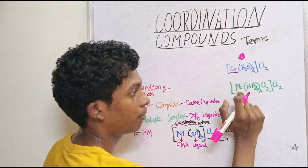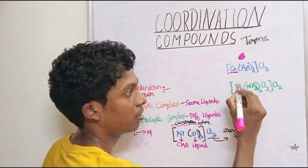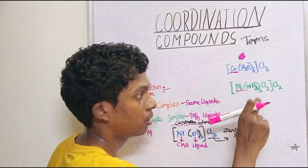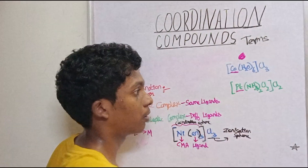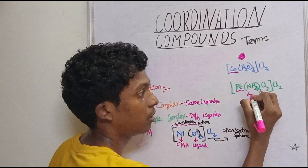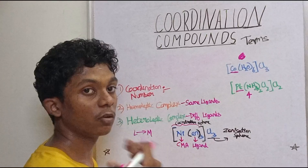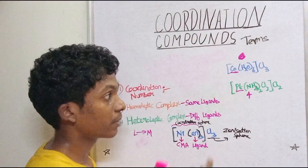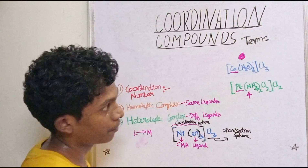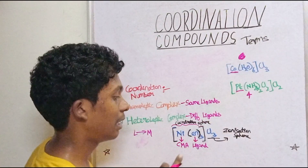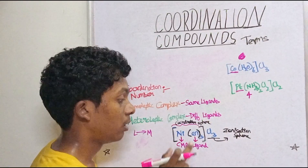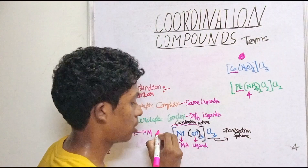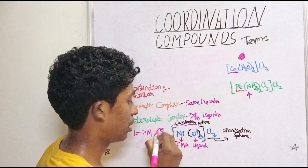For example, platinum is the central metal atom. It has 2 ammonia and 2 chlorine ligands, so the coordination number is 4. Another example: EN is 3, so the coordination number is 3.